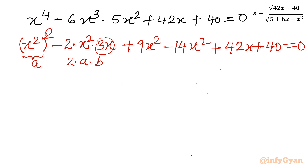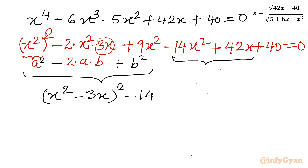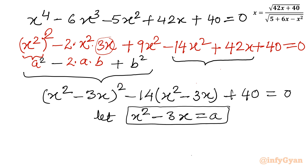Now we can write the perfect square: it is a² - 2ab + b² form, so we write (x² - 3x)² in this place. Then taking -14 common from the remaining terms gives -14(x² - 3x) + 40 = 0. The obvious substitution is: let x² - 3x = a.